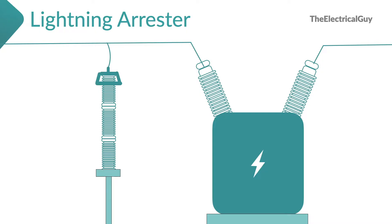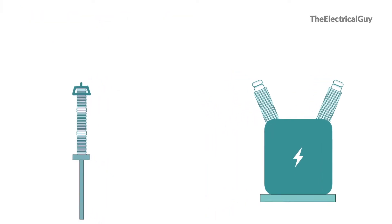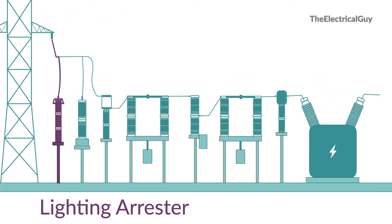Surge arrestors are also used to protect important equipment in a substation, like transformers. They are also used to protect the transmission line. They are connected phase to ground at the incoming feeder as the first apparatus, and also at the terminal of the transformer, terminal of capacitor banks, and terminal of generators.